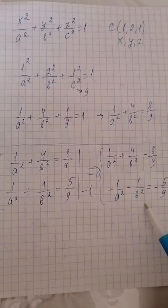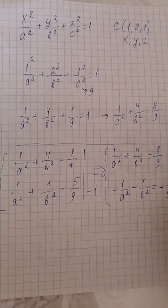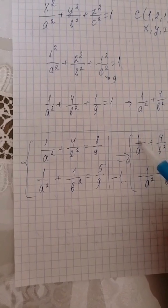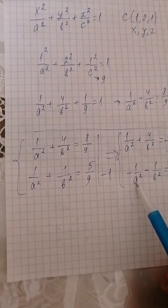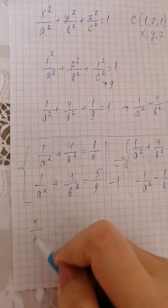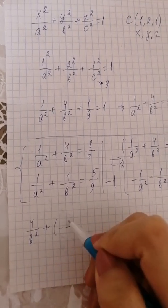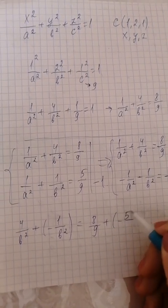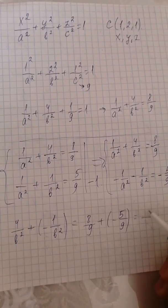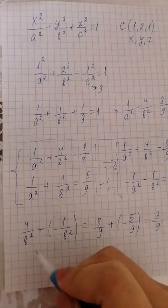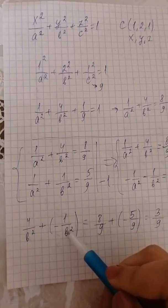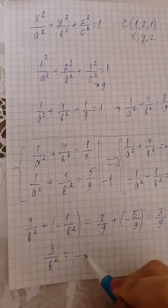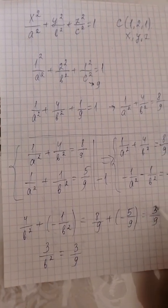Adding the two equations together: the 1 over a squared terms cancel to 0. We get 4 over b squared minus 1 over b squared equals 3 over b squared, which equals 8 over 9 minus 5 over 9, giving 3 over 9. Therefore 3 over b squared equals 3 over 9, so b squared equals 9.